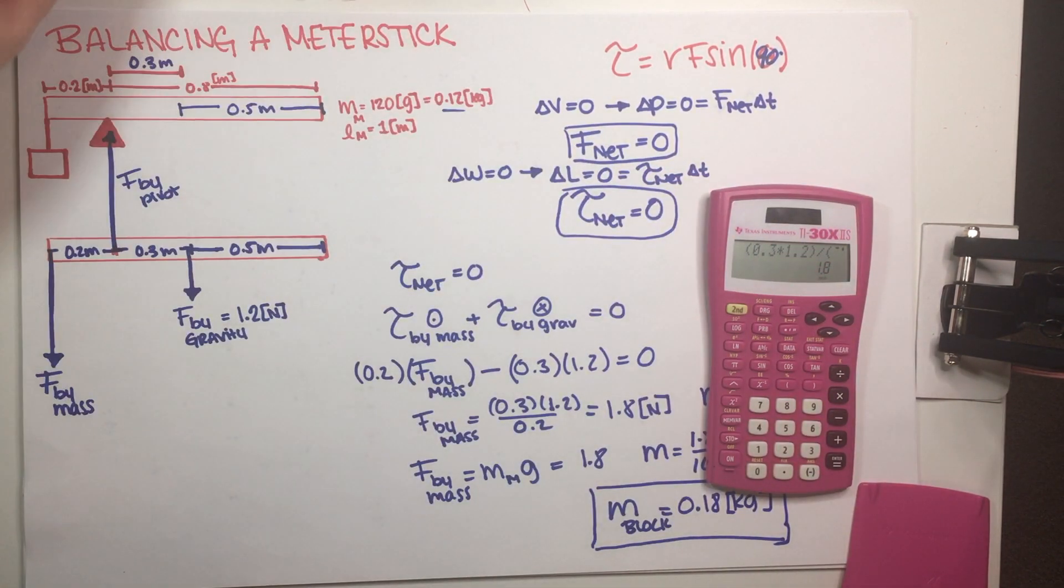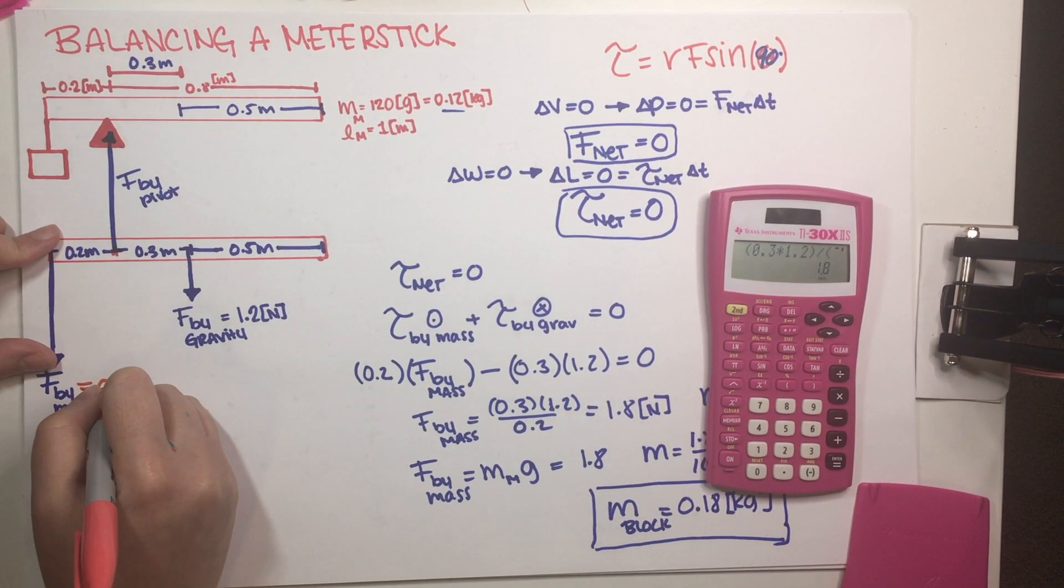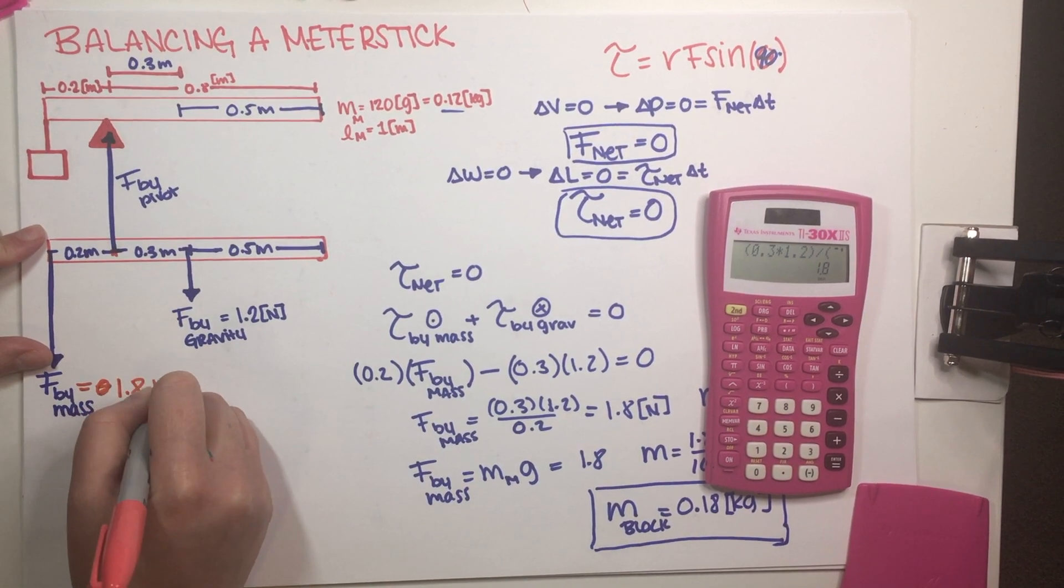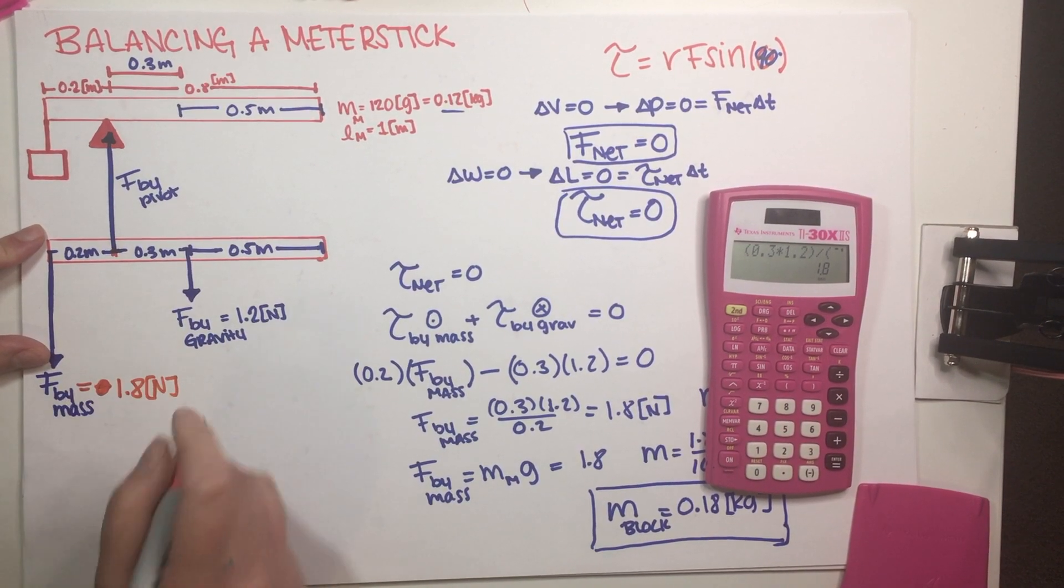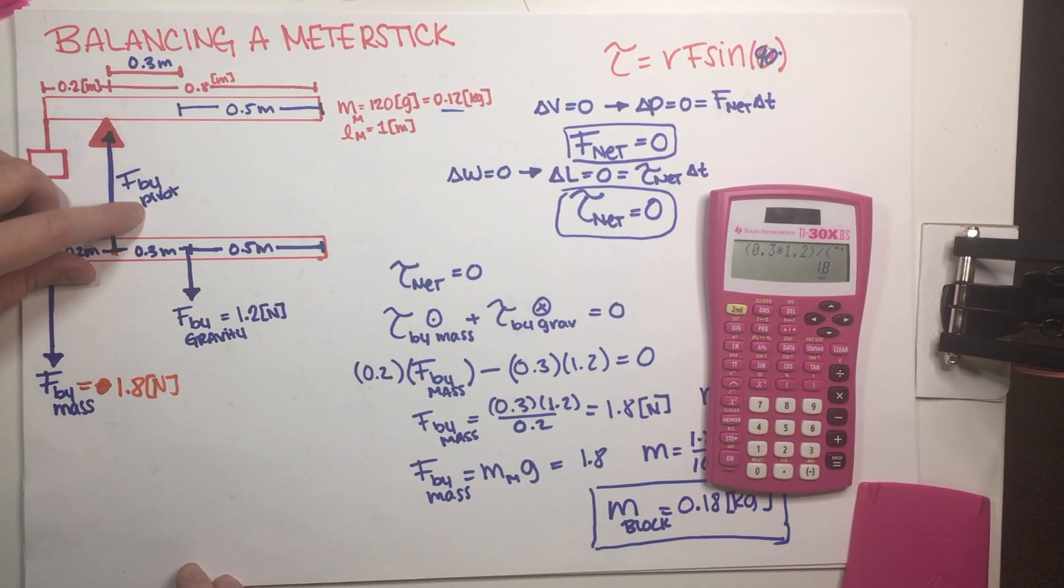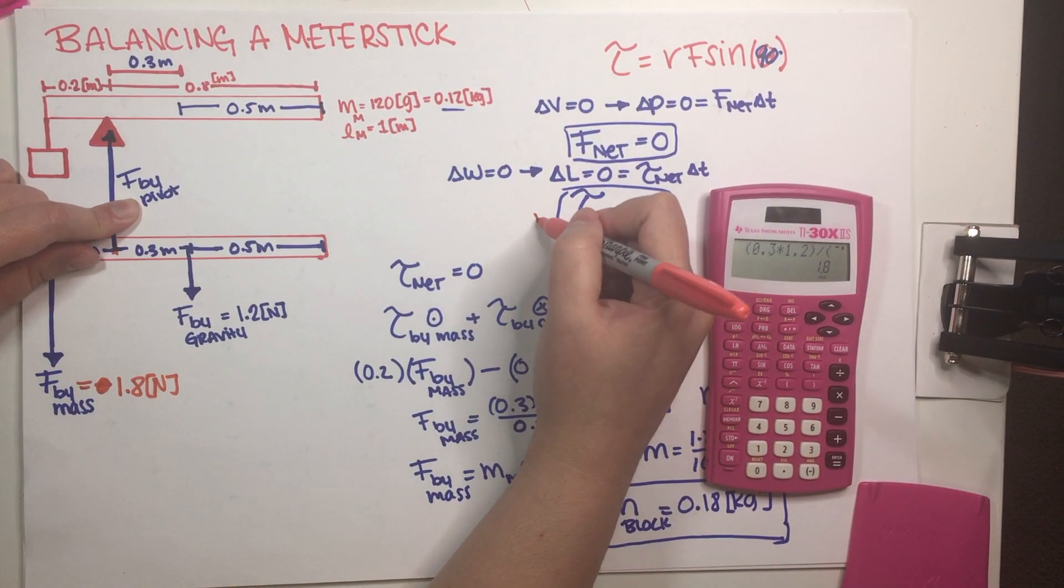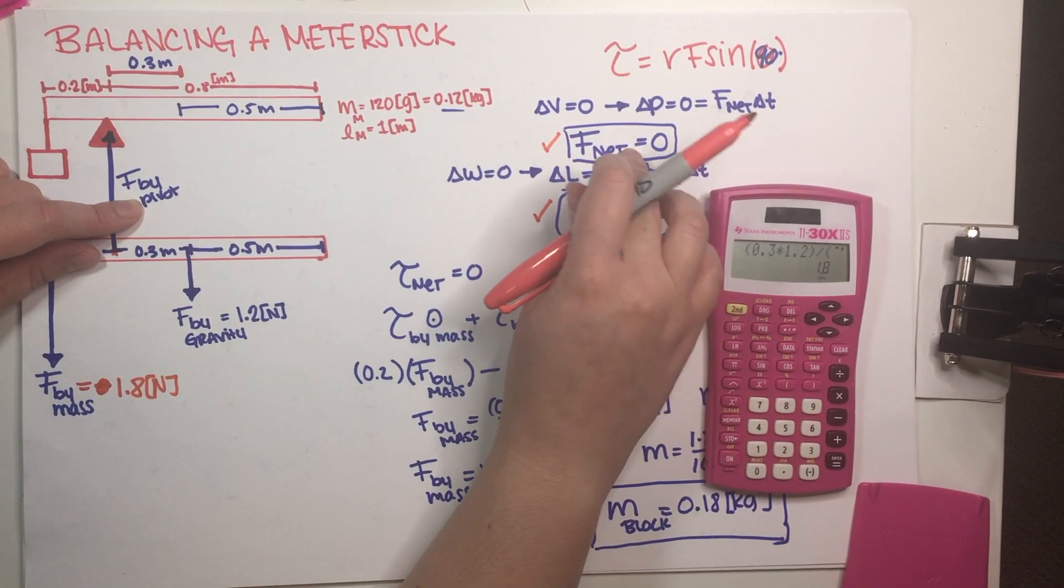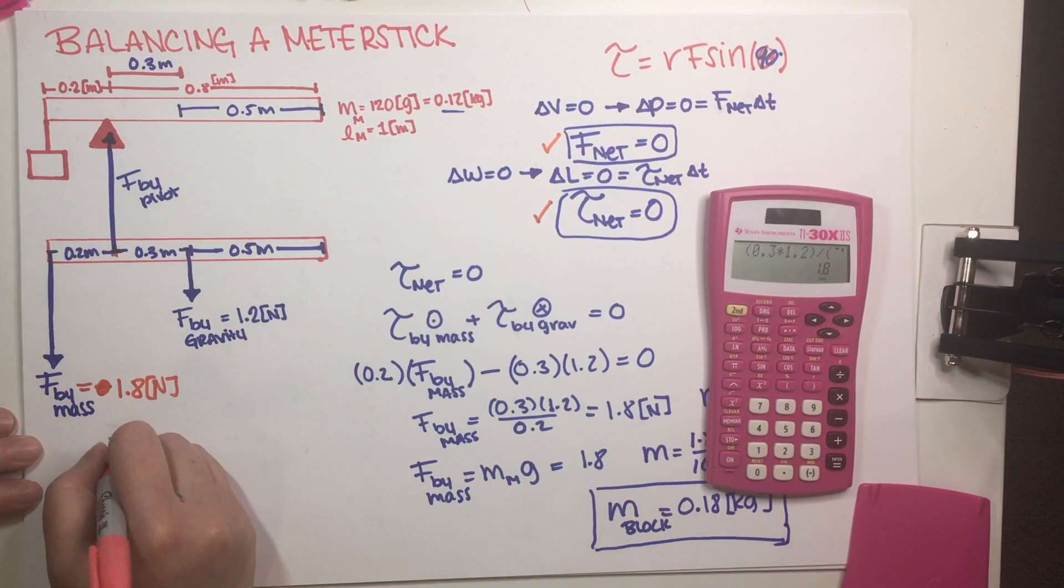So let's go ahead and do part B. So part B is asking us to find the pivot force, which we already know that this is 0, no, that this is 1.8, I'm sorry. This is a force, this is not a mass. And we need to find force by pivot. So we already used this information, so it just seems natural that now we have to use this information.